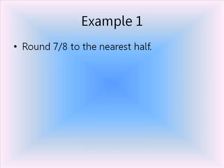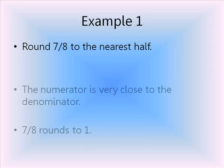For the first example, we're going to round 7-8ths to the nearest half. The strategy here is to look at both the numerator and the denominator. The 7 is very close to the 8, in fact it's right next to it. As a result, 7-8ths we would round to 1.